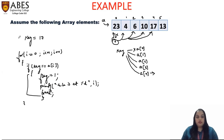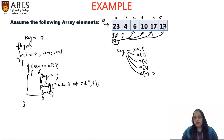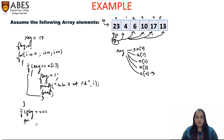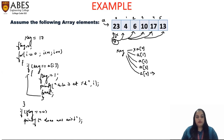If not found, then initially I have taken the flag variable to be zero. If the element — suppose I want to search 19, which is not present — it will keep on searching to the next index value. It will visit all the elements, but element 19 will not be found in the array. After this loop, the flag value will remain the initial value which is zero. In that case, I can say that the element does not exist. This is the logic behind linear search.